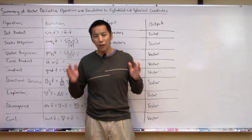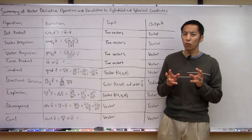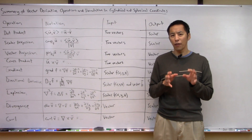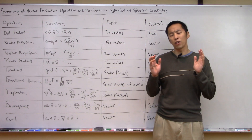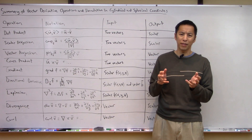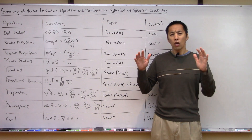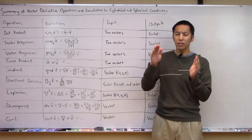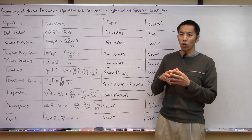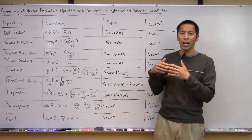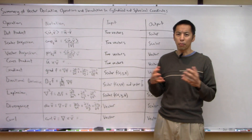Hello everyone and welcome to another video. Over the past several videos we've been talking about several different vector derivative operations, introduced a lot of ideas, discussed notation, and went over some examples. I know that might have been a lot to consume over three separate videos, so I wanted to make this quick video just to summarize what the major derivative operators were, their notation, and most importantly what are the inputs and outputs of each of these operators.